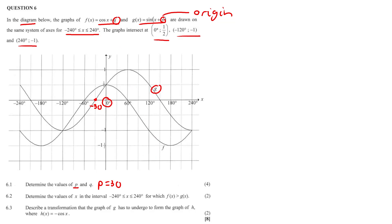Now looking at q: our cosine mother graph is meant to begin at one. Now it's beginning at one half. That is a downward shift, and downward shifts are indicated as negative. So q is equal to negative one half.